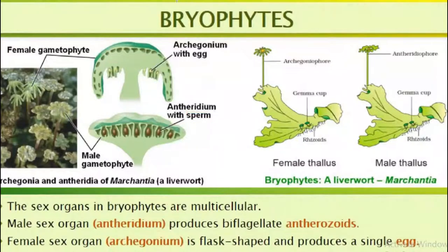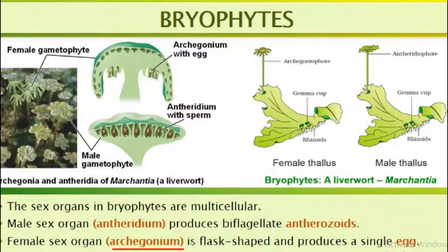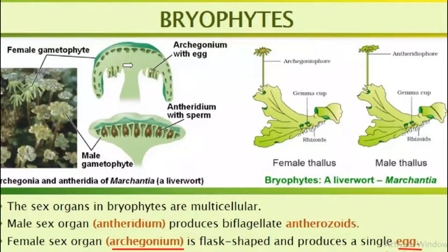The female sex organ is known as the archegonium — A-R-C-H-E-G-O-N-I-U-M. It is a flask-shaped structure. The female gamete is called the egg. Here you can see the structure of the archegonium: it is a flask-shaped structure and the female gamete is the egg.